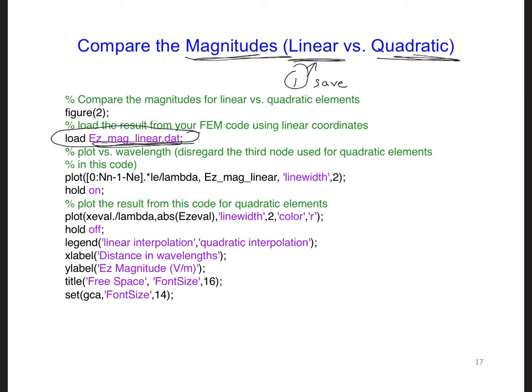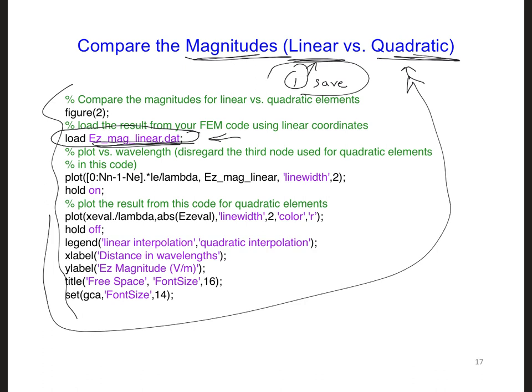So load in the result here. This is in your quadratic code that you're going to have this segment of code. You're going to have this in the quadratic code. So you're going to load the previous result and plot them both together here at the end of your quadratic code.